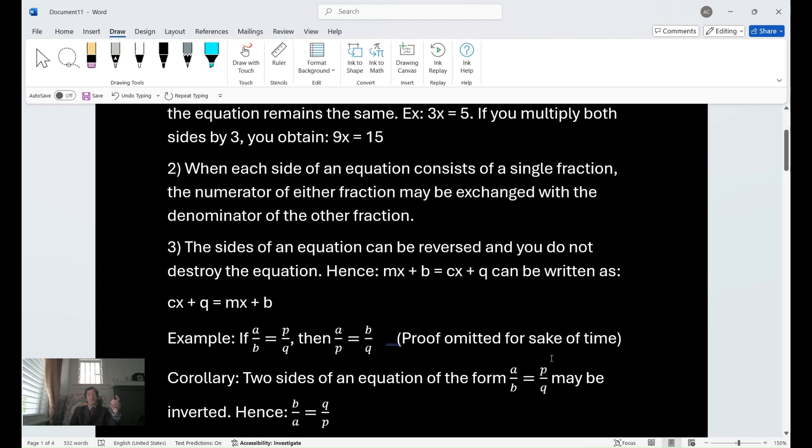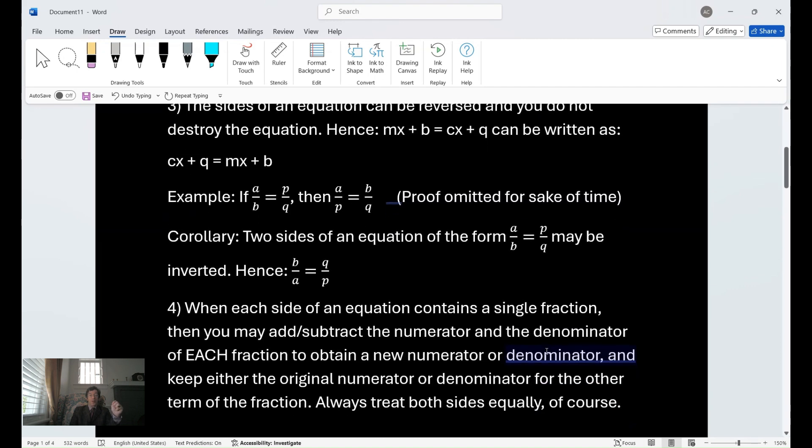Then we have a corollary to this. Two sides of an equation of the form a over b equals p over q may be inverted. And therefore, b over a equals q over p. All right, the fourth principle here. When each side of an equation contains a single fraction, then you may add or subtract the numerator and the denominator of each fraction to obtain a new numerator or denominator. And you keep either the original numerator or denominator for the other term of the fraction. You always treat both sides equally. Of course, you cannot play favorites with equations. They are very jealous.